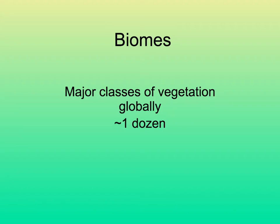Let's talk about biomes, which are major classes of vegetation. Where a given biome occurs, it may not always have the same species, but biomes look the same in different parts of the world. There are perhaps a dozen or maybe a few more biomes.